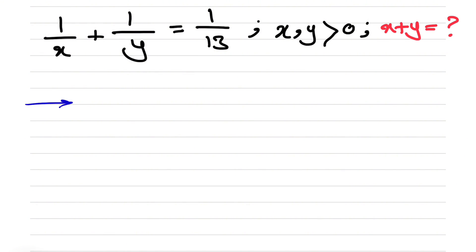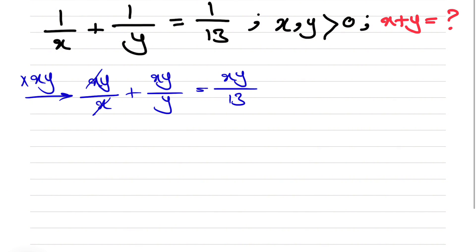What we're going to do here is multiply the equation by x times y. So we have xy over x plus xy over y is equal to xy over 13. And from the first one, we can cancel out the x. And from the second expression on the left side, we can cancel out y. So we'll end up having y plus x is equal to xy over 13.